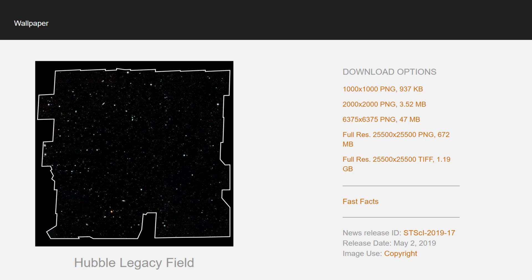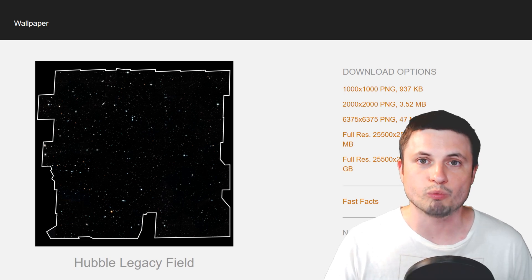The image that they refer to as the Hubble legacy field, as you can see, comes in different sizes. But the actual original image is approximately 25,000 pixels by 25,000 pixels. And it's equivalent to about 672 megabytes. Or if you wanted even high resolution, it's approximately one gigabyte all in one single file.